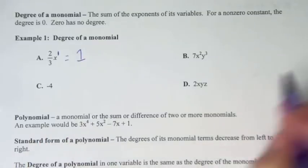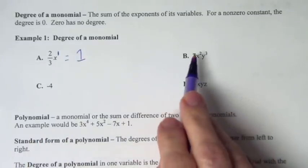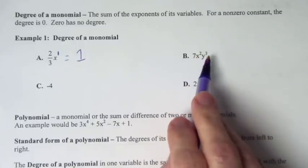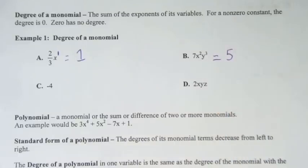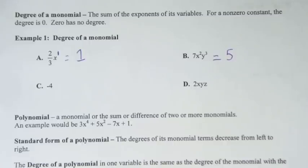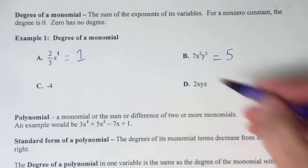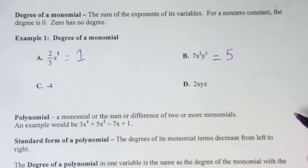Looking at letter B, we look at the variable's exponents. We have x squared, y cubed. So we add 2 plus 3, and we get that the degree is 5. Good question from a student: the 7 doesn't count. The number does not go into play — you only look at the exponents on the variables, not the number. We would not want to look at 7's exponent.